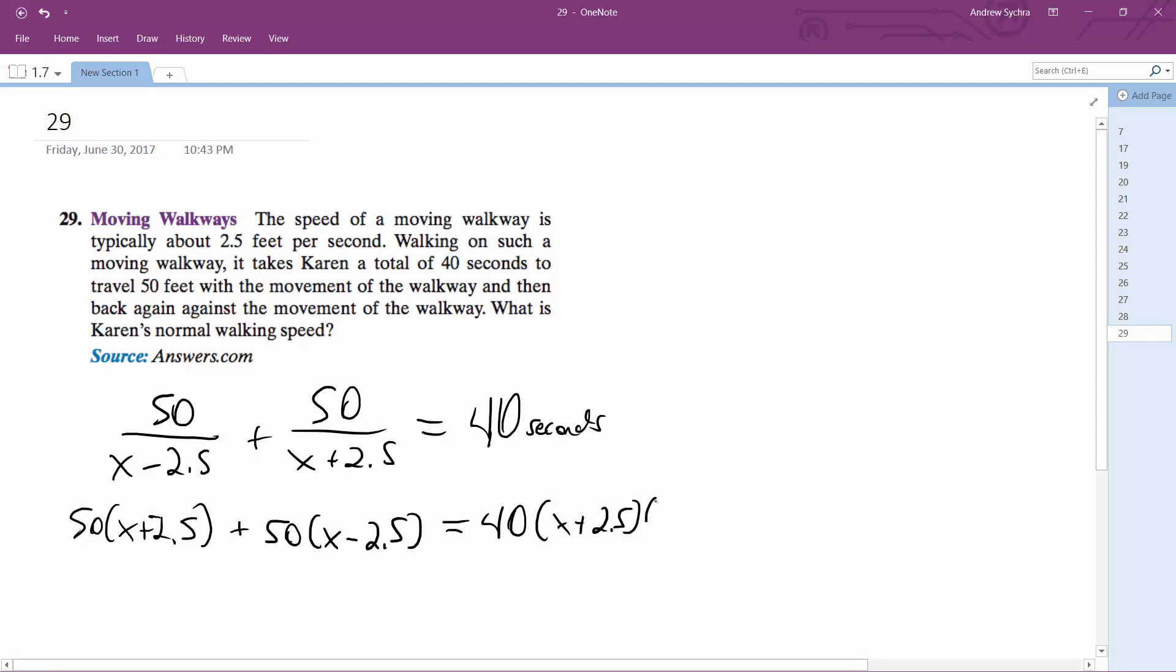And what we end up with is 50x plus 125 plus 50x minus 125 equals 40x squared. And then the middle terms cancel out, we get minus 6.25. These cancel out, we get 100x equals 40 times x squared minus 6.25.